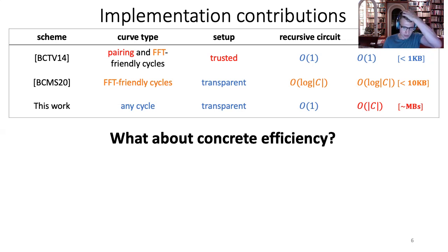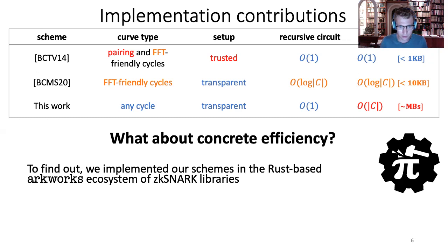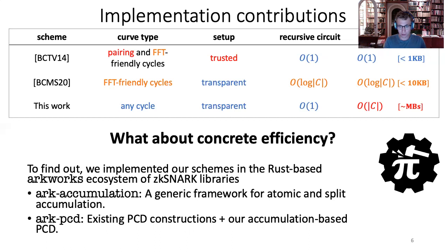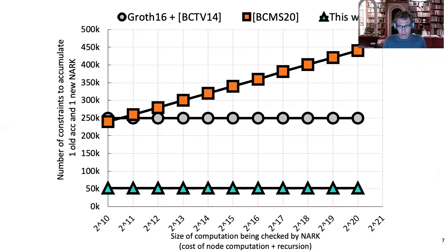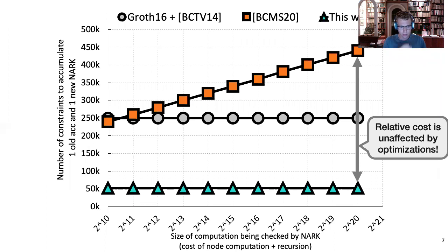The attractive asymptotics led us to ask whether this is also completely efficient in practice. To test this, we implemented the accumulation scheme and the PCD construction in the Arcworks ecosystem, adding two libraries: Arc-accumulation and Arc-PCD, implementing generic frameworks and some older schemes as well. These are available open source and integrate with all the other great libraries in the Arcworks ecosystem. We measured the performance of our scheme and found that it does about five times better compared to the previous scheme, measured in terms of number of constraints in the recursive circuit — the key performance metric. The absolute numbers are already very good, around 50,000 cycle gates.